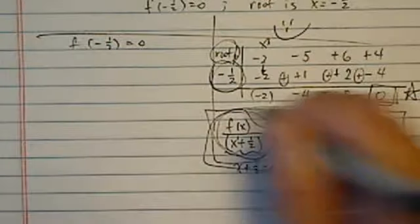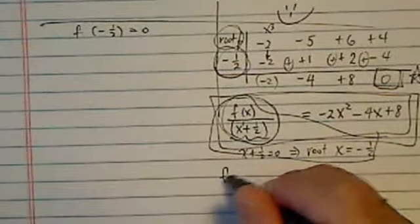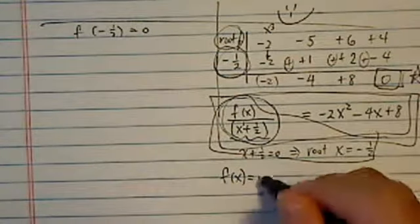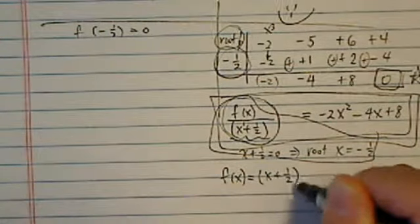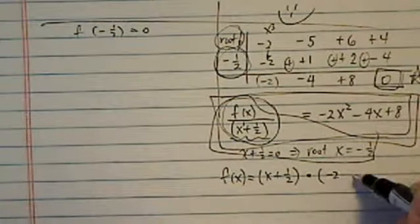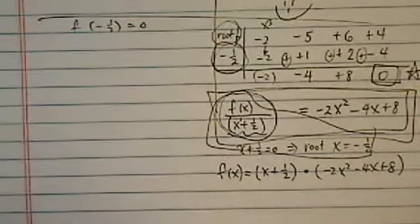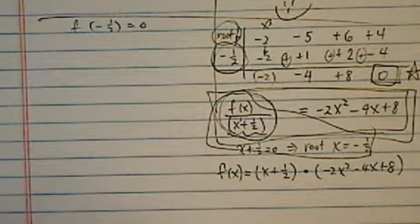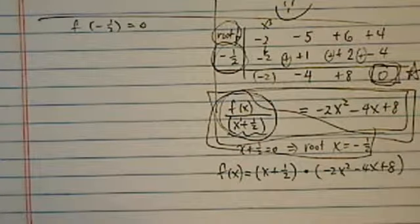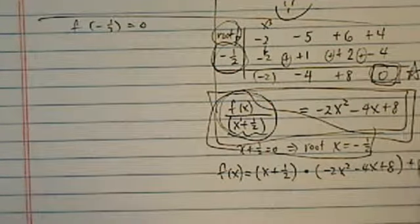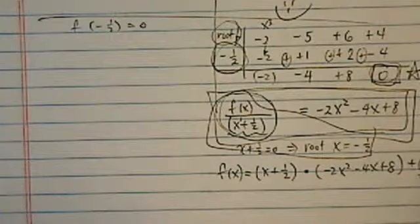After we divide x to the one, we reduce the power by one order. Equal to this. Now, this is really another way to say, look, function can be rewritten as x plus half times minus two x squared minus four x plus eight. That's all what synthetic division is all about. Finding what the remainder equal to zero, basically plus the remainder, which is zero.